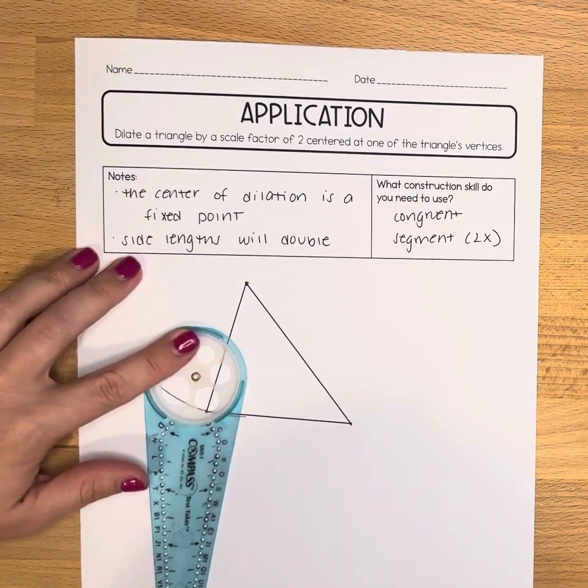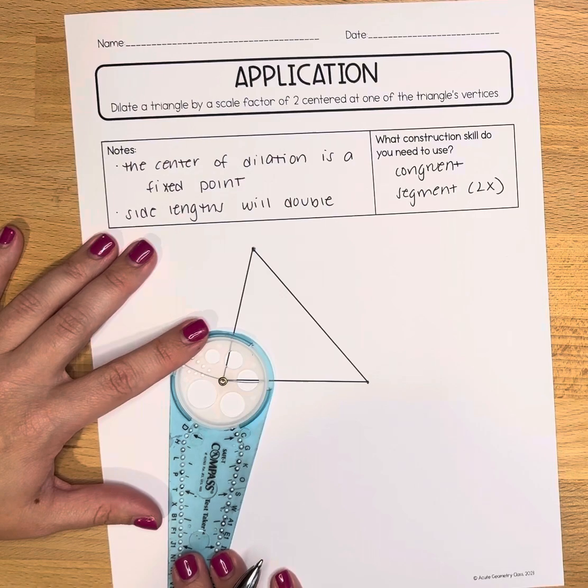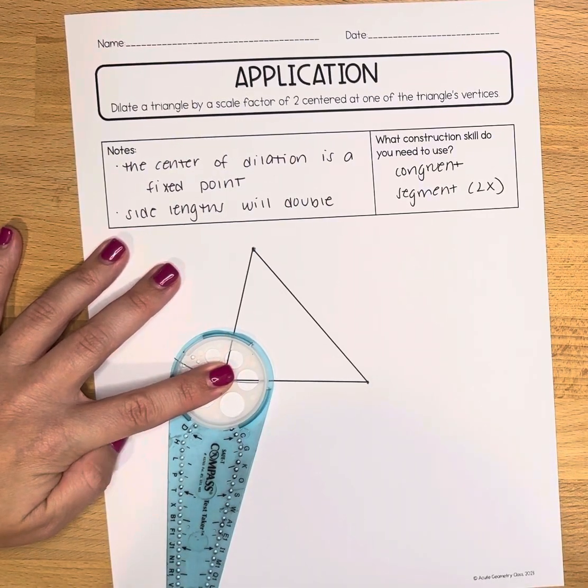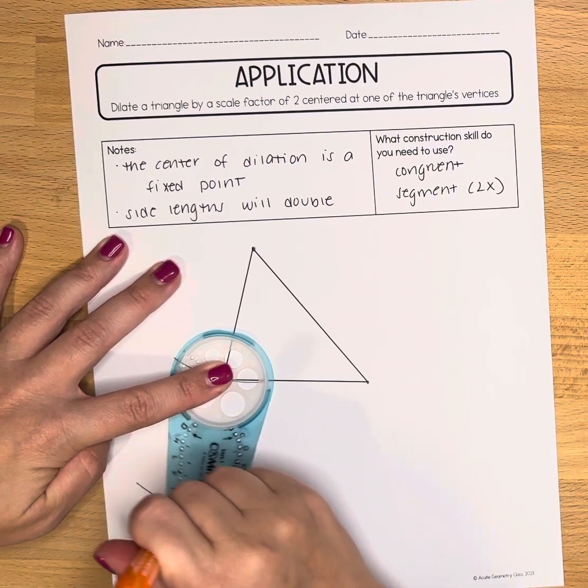Now I'm going to slide my compass down to that vertex and using that same measurement I'm going to make a new arc.